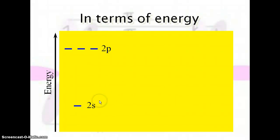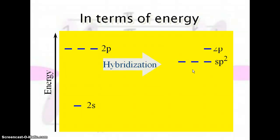In terms of energy for sp2: the 2s is lower than the 2p, and the sp2 falls lower than the 2p as well. That means it's more favorable for the carbon to form an sp2 hybridized orbital than it is to try to bond with a regular s, p, d, f orbital.